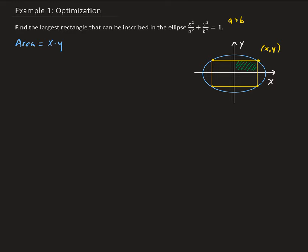Before we optimize, we want to have a function in terms of one variable. We have a y value for x, so what we can do is use the ellipse equation to solve for y in terms of x, and then substitute back. That will give us an area in terms of x only. So let's go ahead and solve for y.